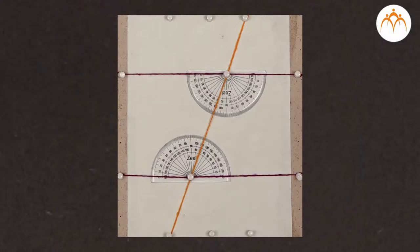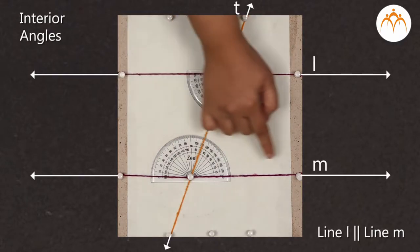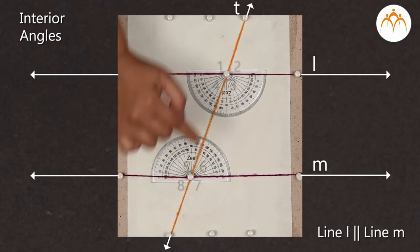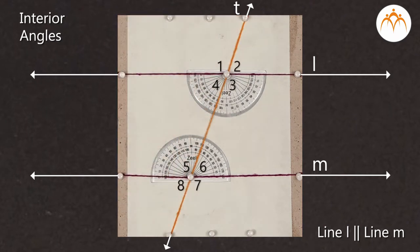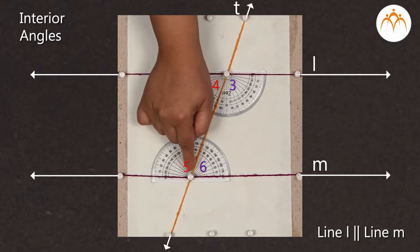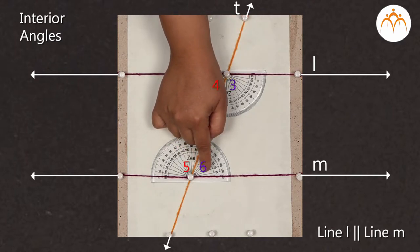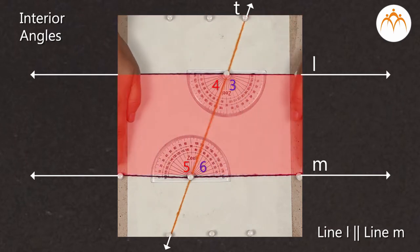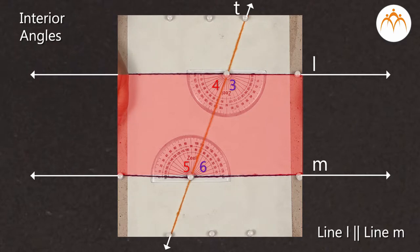In this video, we are going to study about the interior angles. When two parallel lines are cut by a transversal, eight angles are formed. Out of these, angle 3, angle 4, angle 5, and angle 6 get formed in the interior of the region formed by the two parallel lines.